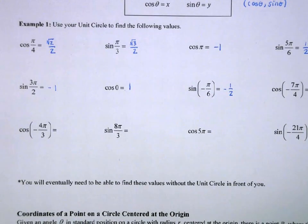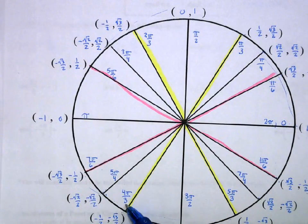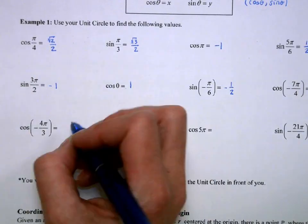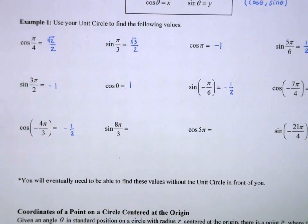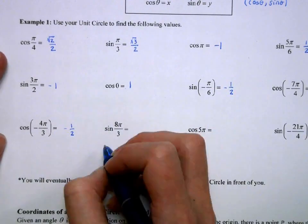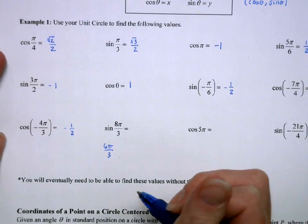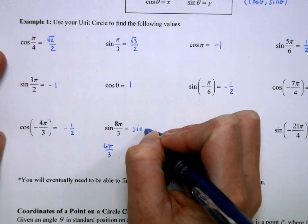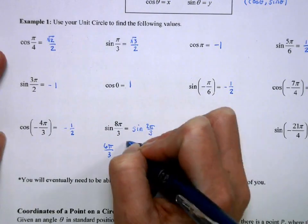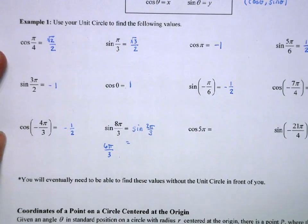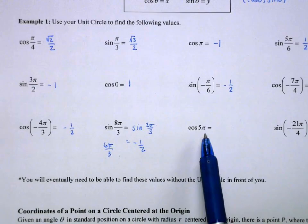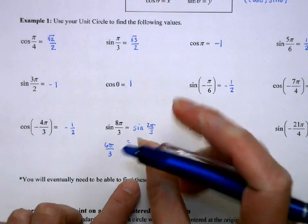Cosine of −4π/3: 4π/3 going in the negative direction is equivalent to 2π/3, and the x-coordinate there is −1/2. For 8π/3: subtract 2π (which is 6π/3), leaving 2π/3. That's in the second quadrant close to the y-axis. I mistakenly said x — it's actually the sine, so the y-value at 2π/3 is +√3/2.